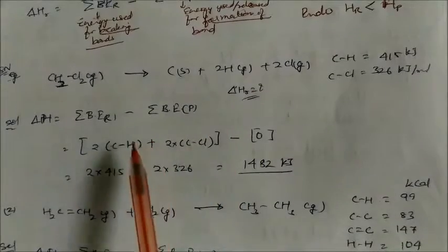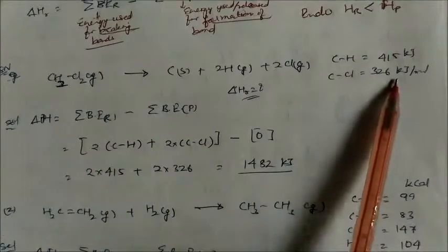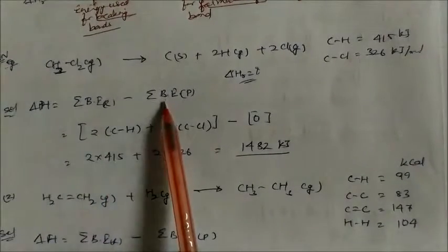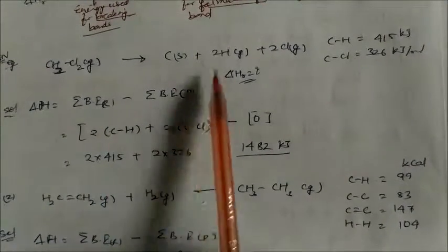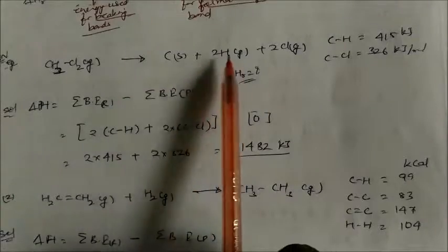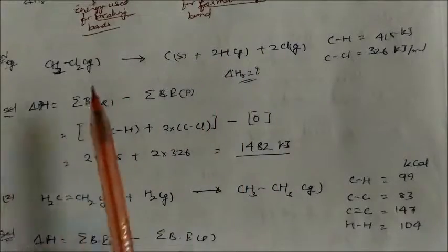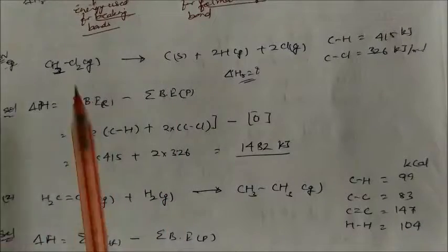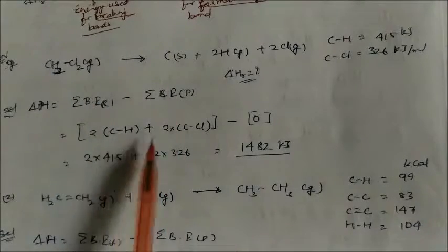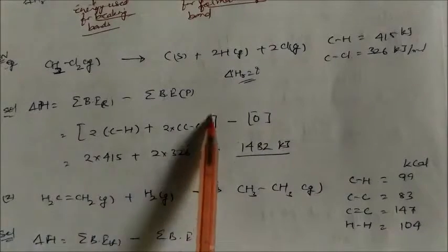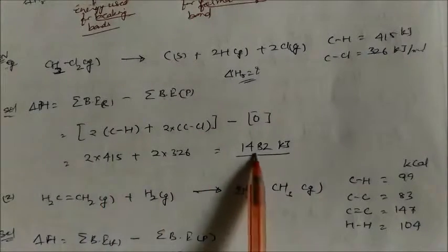For CH₂Cl₂ → atoms: 2 C–H bonds (2 × energy) + 2 C–Cl bonds (2 × energy), product = zero (isolated atoms). Substituting values gives the heat of atomization.